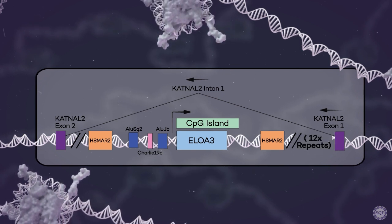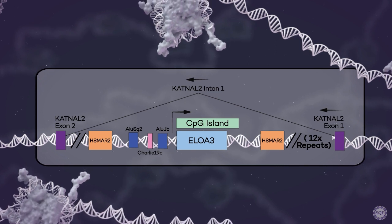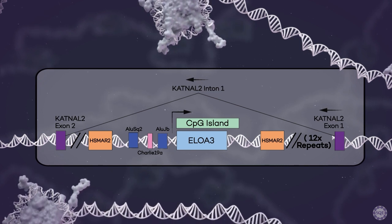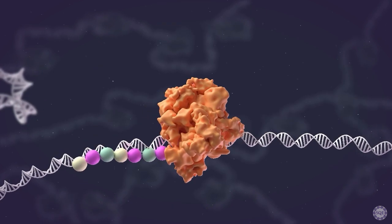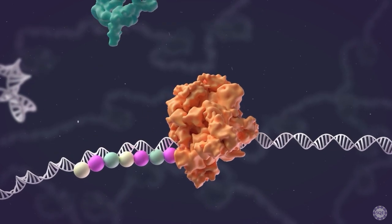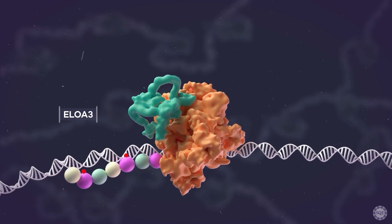Moreover, the ELOA3 gene cluster has undergone concerted evolution and homogenization within primates. ELOA3 binds to RNA polymerase II and stimulates the rate of transcription.